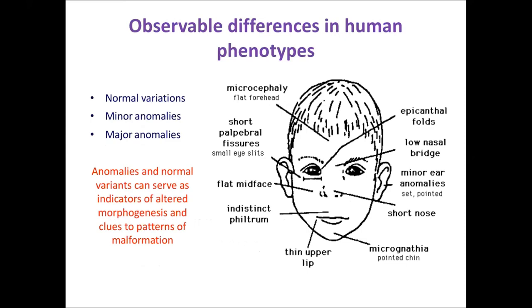Some commonly associated craniofacial dysmorphologies exist on a spectrum from normal variations to minor anomalies to major anomalies. The most common ones include microcephaly, flat forehead, epicanthal folds, low nasal bridge, minor ear anomalies, short nose, micrognathia, thin lips, indistinct philtrum, and flat mid face. These morphological changes can give clues about malformations that may be present in other organ systems.